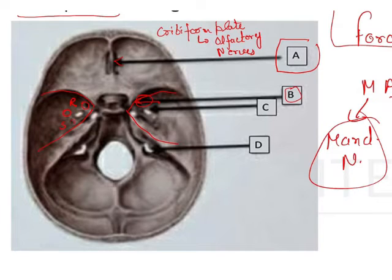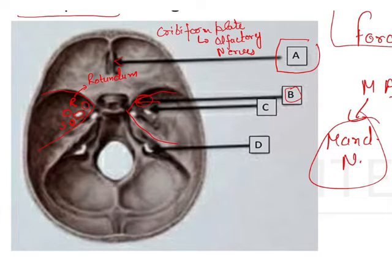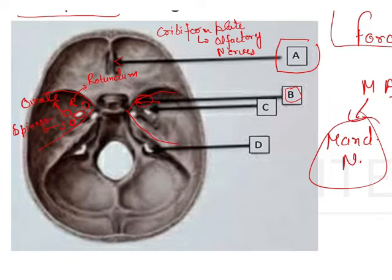S is foramen spinosum, O stands for foramen ovale, R stands for foramen rotundum, and S stands for foramen spinosum.